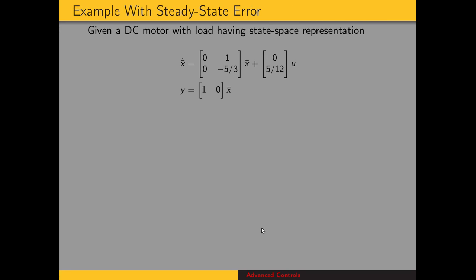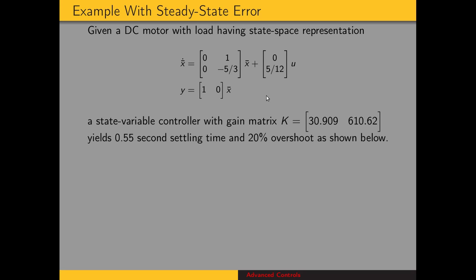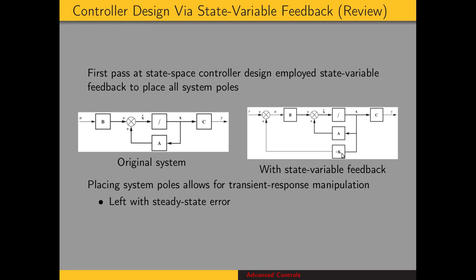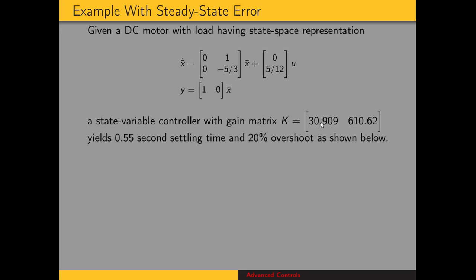Here's an example of that. We have a DC motor with a load, so here's a state space representation for it. The load has damping but there's no stiffness, no spring resisting the motion. Here's A, B, C, and then the D matrix is 0. If we use a gain matrix K in this configuration, we end up with a 0.55 second settling time and 25% overshoot.